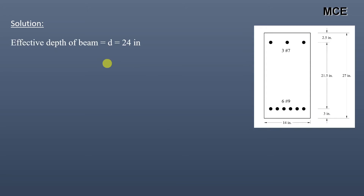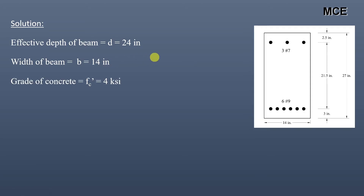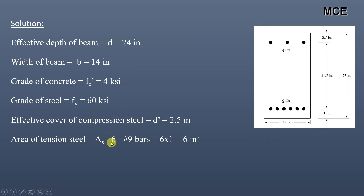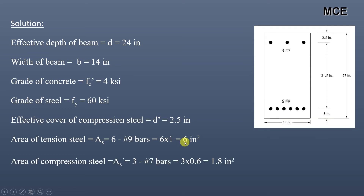We will see what is given in the question. Effective depth of beam is equal to 24 inch, width of beam is equal to 14 inch, grade of concrete is equal to 4 KSI, grade of steel is equal to 60 KSI, and effective cover of compression steel is equal to 2.5 inch. Area of tensile steel consists of 6 bars of bar number 9; area of one bar number 9 is 1 inch square, so total area is 6 inch square. Area of compression steel consists of 3 bars of bar number 7; area of one bar number 7 is 0.6 inch square, so total area is 1.8 inch square.